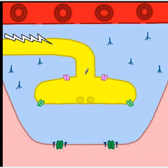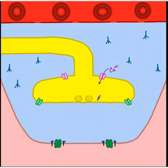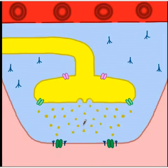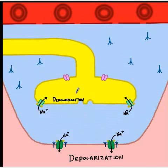Here comes the fourth twitch — the fourth stimulus — which results in calcium entry. It will result in calcium working in concert with other proteins to cause the release of these acetylcholine vesicles, and acetylcholine will depolarize the motor end plate causing the fourth twitch, and prepare the next round of vesicles.